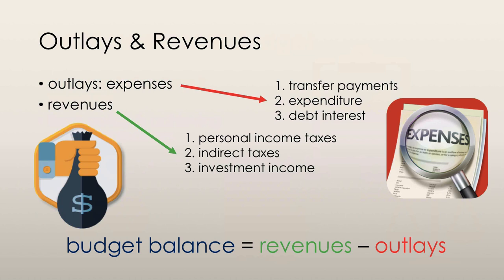The government generally earns its revenue from personal and corporate income taxes, indirect taxes — most commonly sales tax — and investment income. The government's largest source of revenue is personal income taxes paid by the entire population.